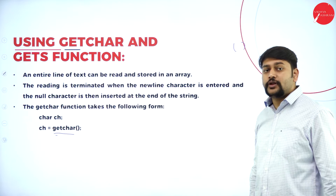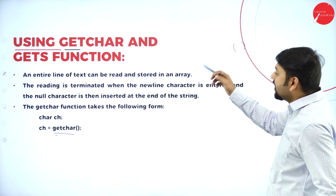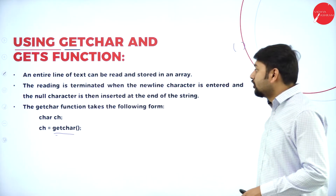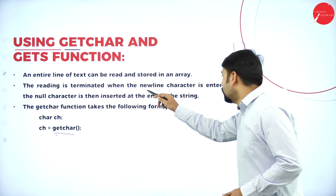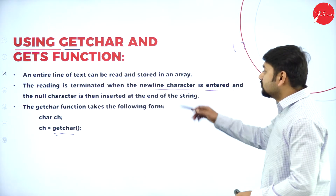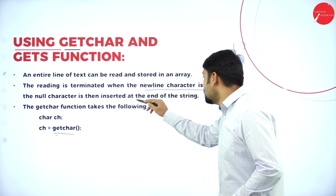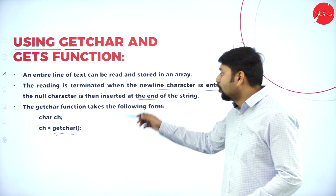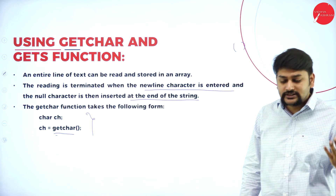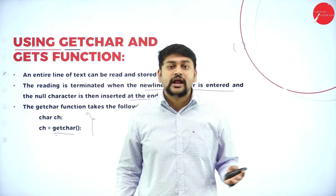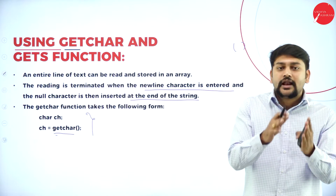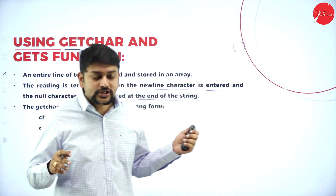To summarize getchar: the entire line of text can be read and stored in an array. Reading is terminated when the newline character is entered. As soon as it encounters the newline character, the null character (\0) is inserted at the end of the string. This is the syntax for the getchar function.